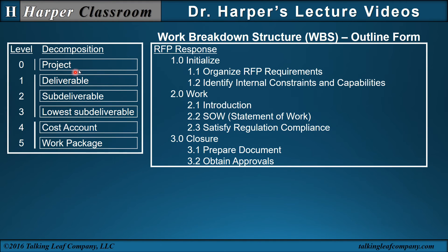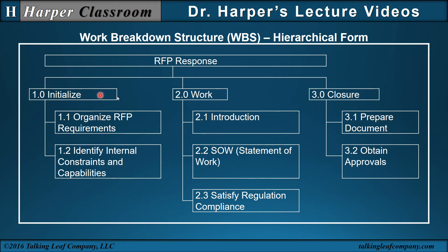Using this decomposition, we have level zero — the project — which is the RFP response. Level one is the deliverable: initialize, work, and closure. Level two would be 1.1, 1.2, etc. Since this is the lowest level, that would be our level of management responsibility and also our work package. This is outline form. We could also express it in hierarchical form, where here are our major deliverables and here are our sub-deliverables, which represent our management responsibilities and work packages.